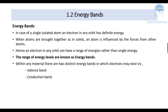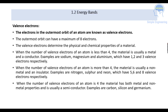Within any material, there are two distinct energy bands in which the electrons may exist: the valence band and the conduction band. Valence electrons are the electrons in the outermost orbit of an atom. In the outermost orbit, it can have a maximum of 8 electrons. The valence electrons determine the physical and chemical properties of that material.